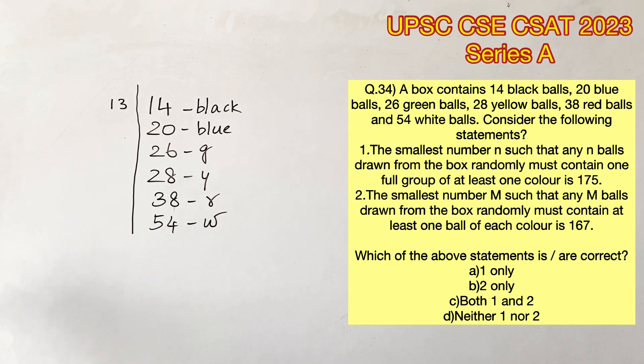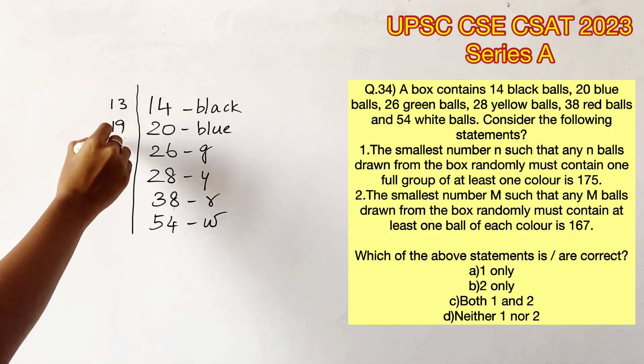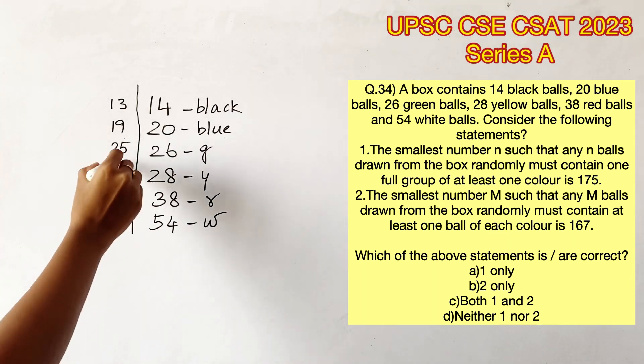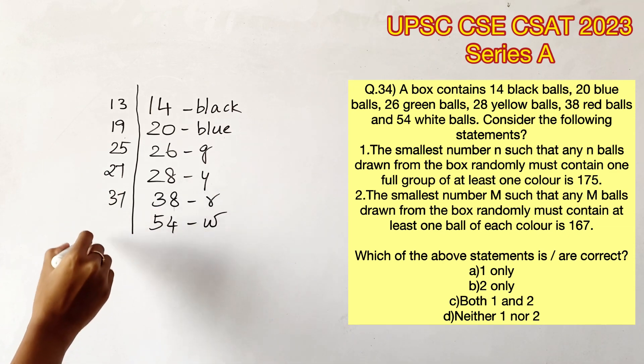So that would be 13 from black, 19 from blue, 25 from green, 27 from yellow, 37 from red, and 53 from white. Adding all these up, we get 174.